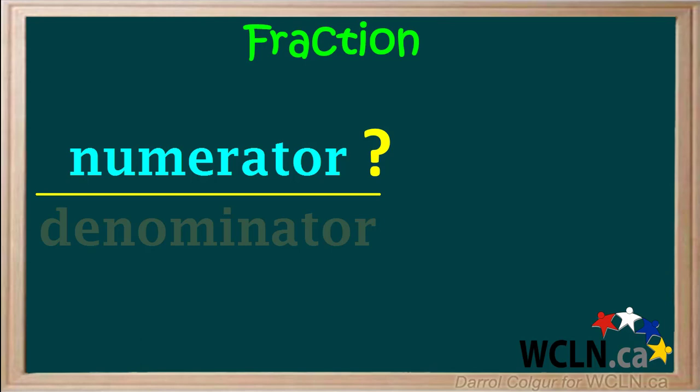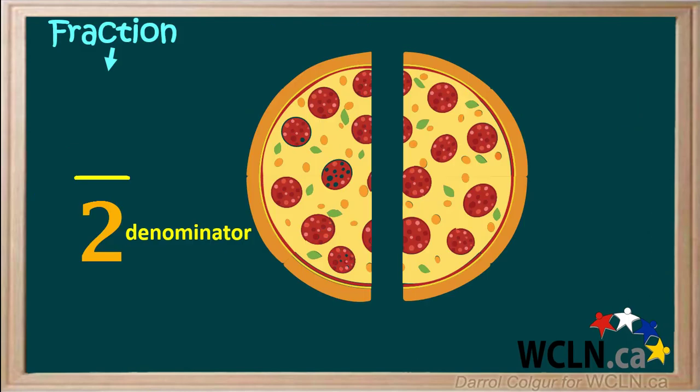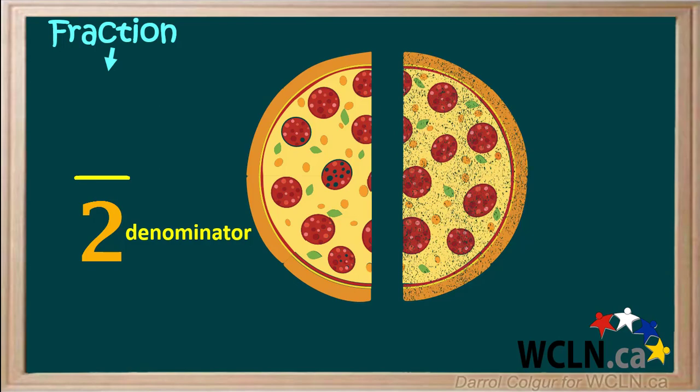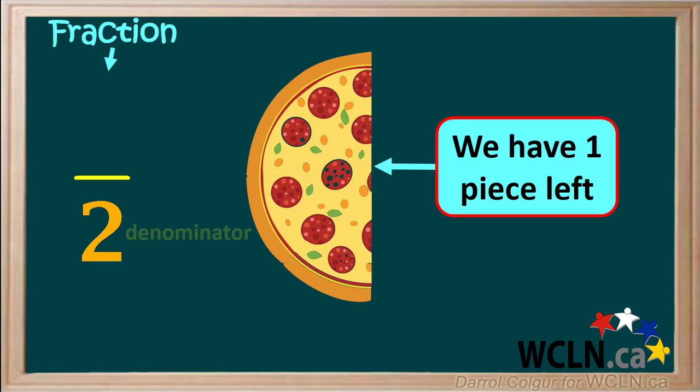So what does the numerator mean? The numerator is the number of those parts we're talking about. Let's go back to our pizza that was cut into two parts, giving us a denominator of two. Let's say someone ate the piece of pizza on the right. Out of the two original pieces, we have one piece left.